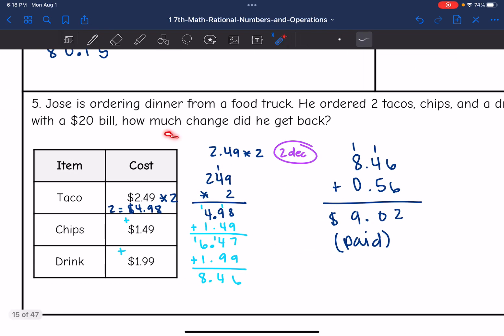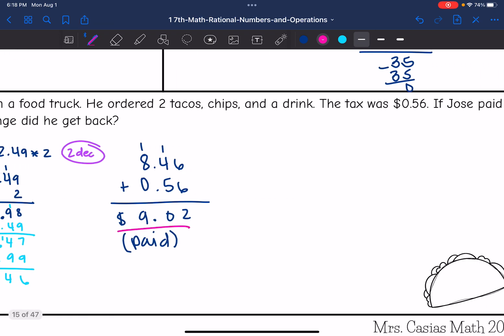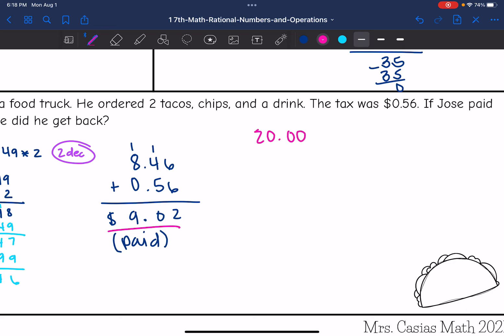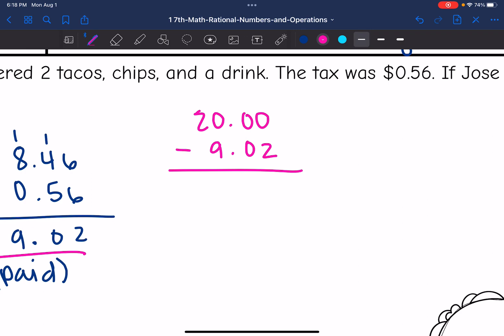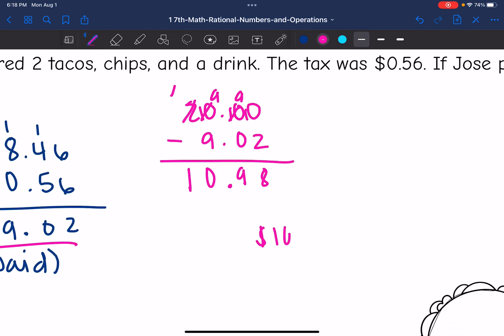But the question says how much change will he get back if he pays with a $20 bill? So now I need to do 20 minus what he paid to figure out his change. So 20 minus 9.02. I'm going to need to do some borrowing here. Change to a 1, 9, 9. 10 minus 2 is 8, 9 minus 0 is 9, 9 minus 9 is 0, and we'll bring down the 1. So he will get $10.98 back in change.